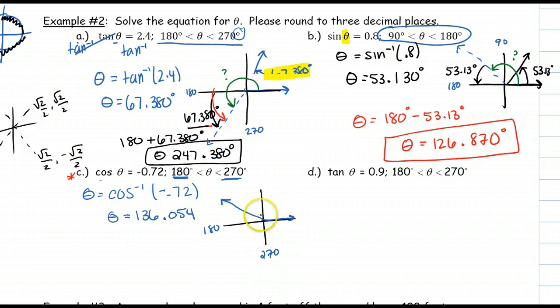The first thing we need to do is figure out the reference angle. So far, the reference angle was given to us because the angle we got was in the first quadrant. But in this case, 136 is not in the first quadrant. So we have to figure out the distance between 136.054 and 180. So 180 minus 136.054. Your reference angle is 43.946. You'll just do that in your calculator. So I know that this angle is 43.946.